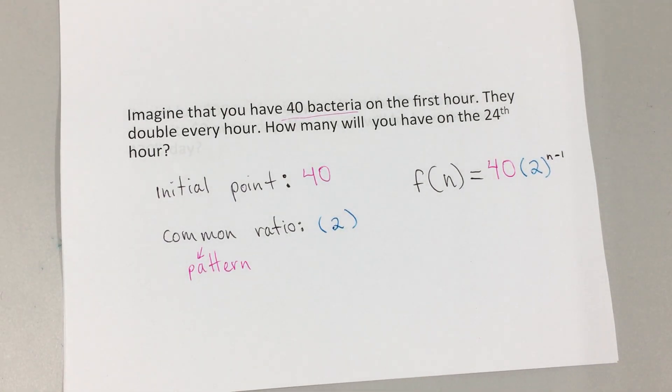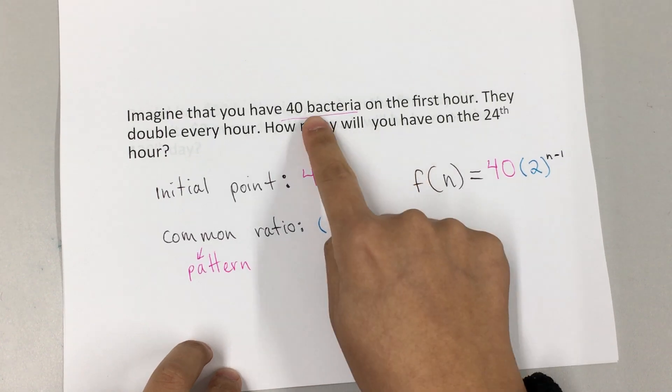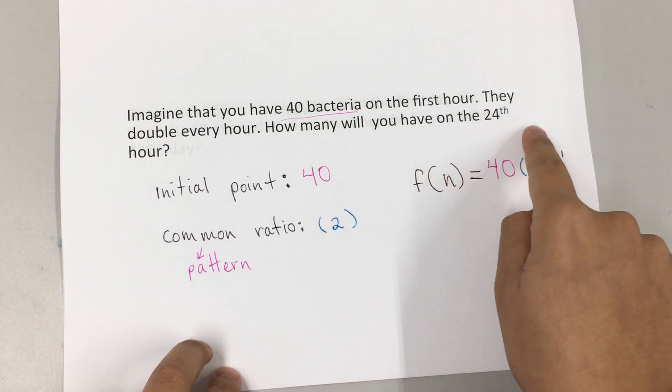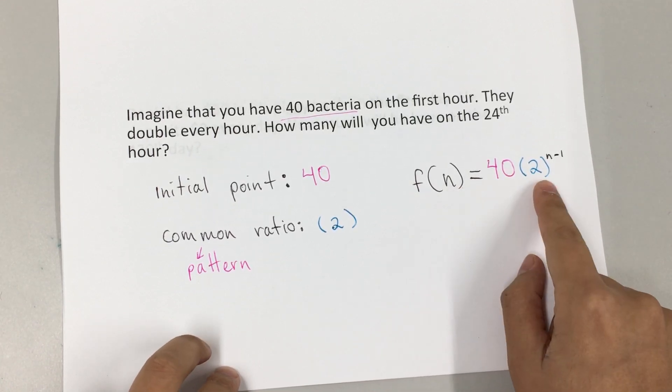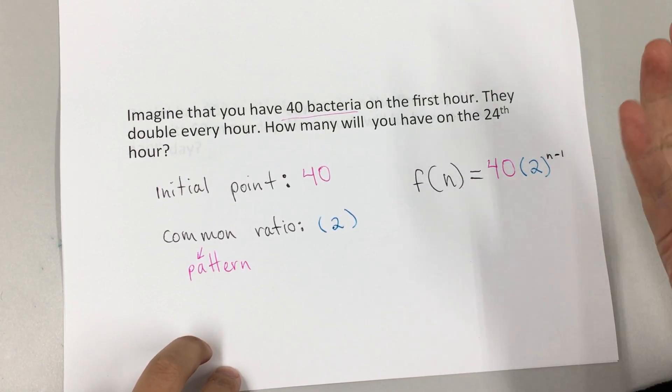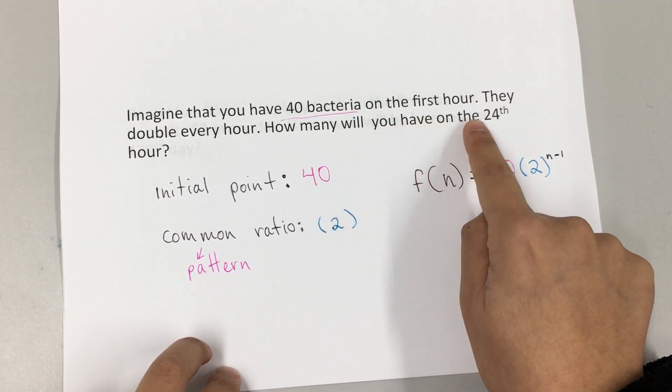That's going to be my explicit formula. However, they are asking how many bacteria will you have on the 24th hour. Remember that if it was the recursive formula, then we would have to do f(1), f(2), f(3), f(4), all the way to f(23) to be able to figure out f(24).